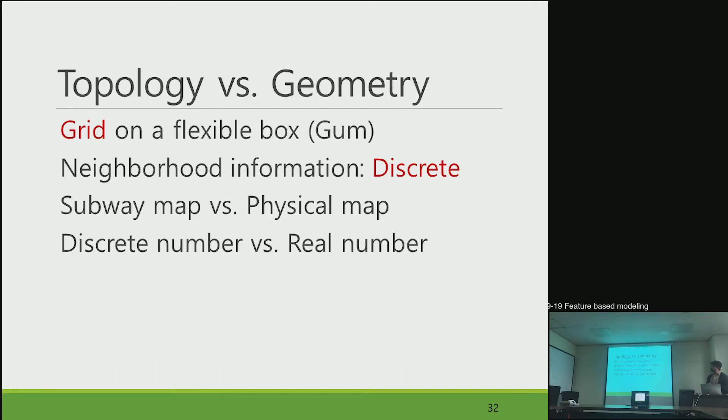For the next thing, I should explain more about topology and geometry. As the professor has already explained, topology is the process of the corresponding surface or the environment. You can see our neighboring information should remain the same. And geometry is the actual values of everything.